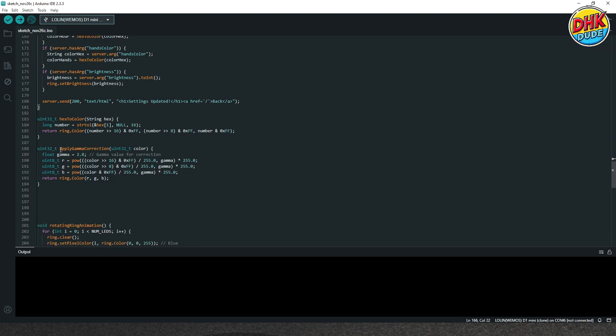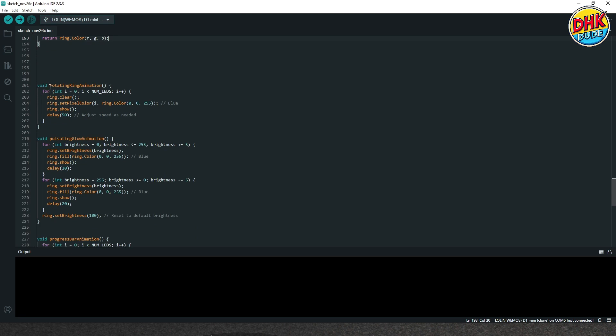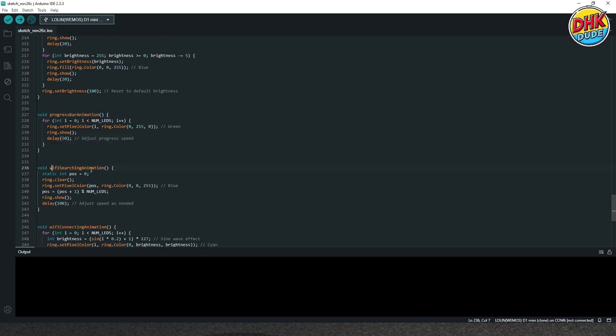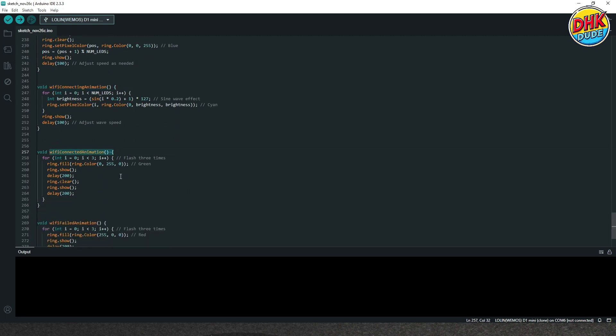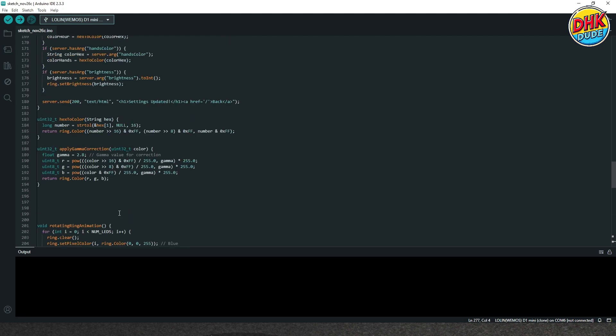Here we have made function for the gamma correction to properly display colors in low brightness. Now here we have some cool functions to display on different events like boot sequence, connection to Wi-Fi, searching Wi-Fi, pulsating LED function and display progress of the connection. So with this our sketch is now ready to be flashed to the controller.